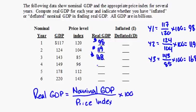Continuing with the same formula, real GDP in year four is 159, in year five it's also 159, and in year six it's 154. In each case, we take the nominal GDP, divide by the price index, and multiply by 100.